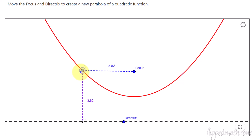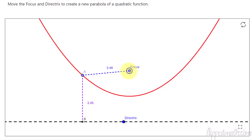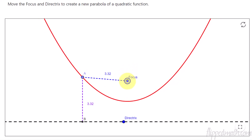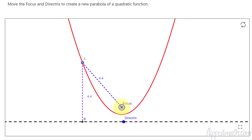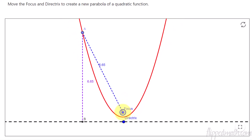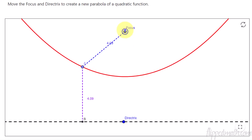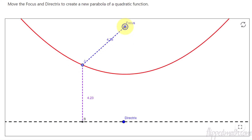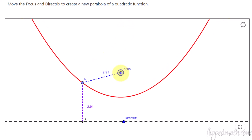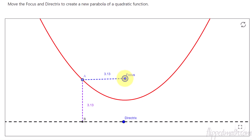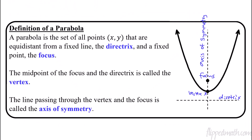The cool thing here too: if I take the focus and drag it, you can see that the closer the focus is to the directrix, the steeper the parabola will be, and the further away, the flatter and wider the parabola will be. You can play around with that — the link is in the description. That helps define this first set: all points equidistant from a directrix and a focus.